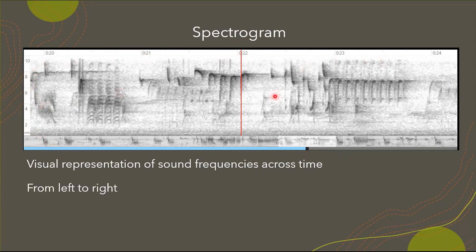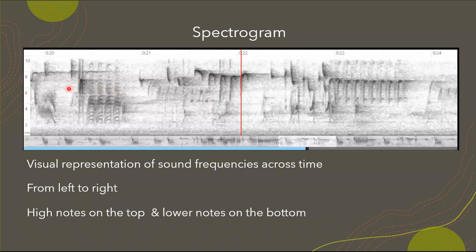A spectrogram is read from left to right, similar to a music staff. High notes are on top and lower notes are on the bottom. Right now this is a spectrogram of a Carolina chickadee — they make pretty high-pitched calls, so all the notes hit at the top. If this were a spectrogram of an owl, most notes would be around the one, two, and three kilohertz range at the lower part.